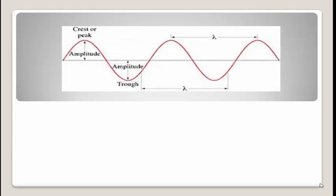Again in the diagram, amplitude is the maximum displacement of a particle from the mean position. The peak or crest is the point of maximum displacement in the upper portion, and in the lower portion is the trough. Lambda is measured from crest to crest in the upper portion, and from trough to trough in the lower portion.